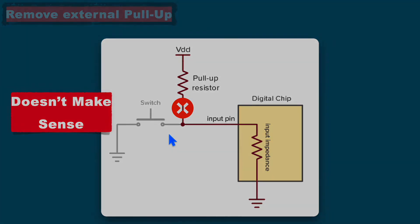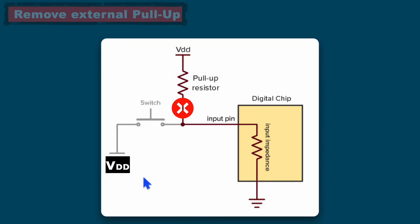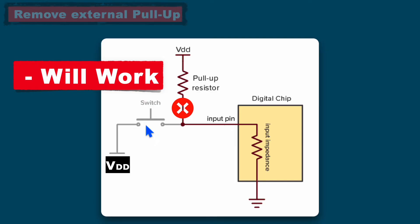There is another approach: connect the switch to VDD or high voltage. When the switch is pressed, we get VDD or logic high at the input pin. When the switch is open, we get logic low because the internal input impedance is connected to ground. In this way, we get logic low when the switch is open and logic high when the switch is pressed. This approach will work correctly.